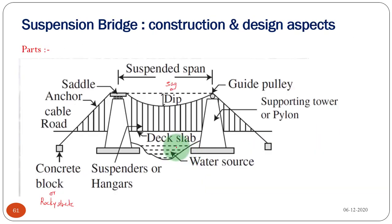If you take a suspension bridge, the cable is flexible — it cannot resist any bending moment. That is why when you apply loading, it will take the shape of the bending moment, so there will be only a net tensile force. That is why cables are always funicular structures; they take the shape depending on the type of loading. In a real situation, suppose you have a bridge and a truck carrying some heavy load — that loading will be a point load.